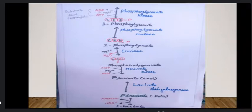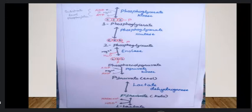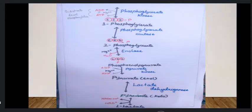The phosphoglycerate kinase reaction follows. Kinase transfers a phosphate group from one molecule to another. ATP is produced from ADP in this step — this is substrate-level phosphorylation. The product is 3-phosphoglycerate.